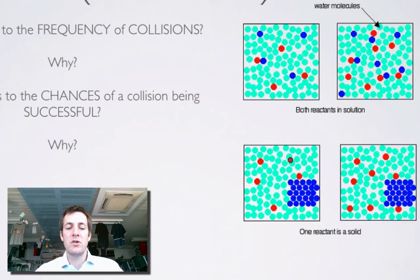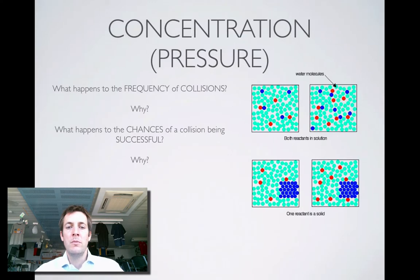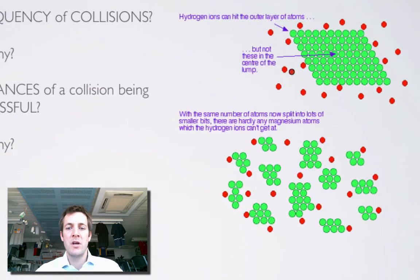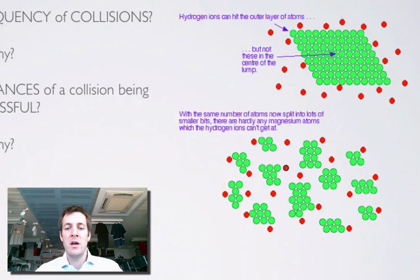Moving on to surface area — the second factor. In these diagrams we have a reactant reacting with red particles. In one case it's a large lump with low subdivision; in the other the green reactant has been divided into smaller pieces, giving a greater surface area. The same number of atoms are present but broken into smaller bits. The frequency of collisions increases as you increase surface area because there are a greater number of particles exposed to collisions.